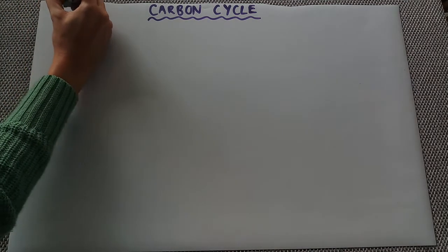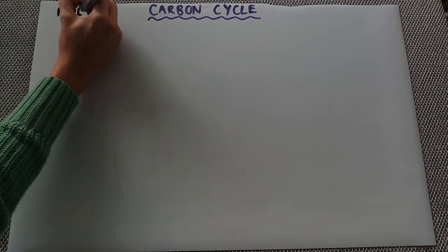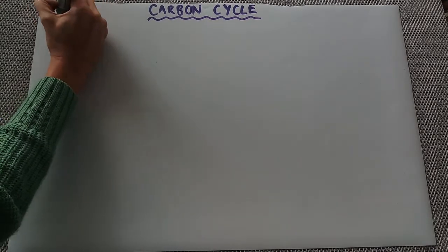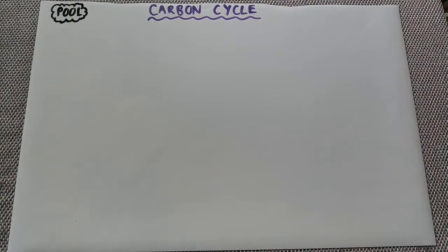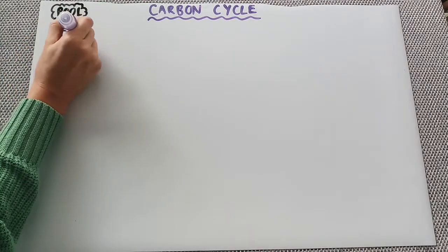Remember there are two different things that are represented within the carbon cycle. We have pools which I'm going to draw in this way and then we have what the flux is which I'm going to indicate with an arrow.